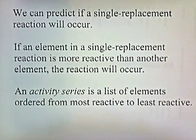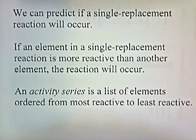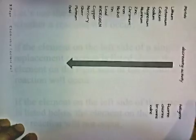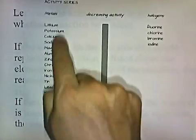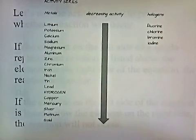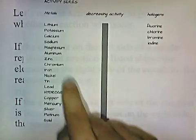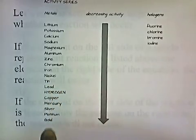We can predict if a single replacement reaction will occur. If an element in a single replacement reaction is more reactive than another element, the reaction will occur. An activity series is a list of elements ordered from most reactive to least reactive. We put the metals on one side and the halogens, which are in group 7A, on the other side. The higher up on the list an element is, the more active it is; as we go down the list, elements become less active.